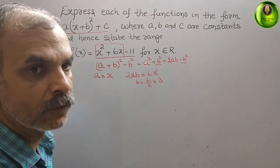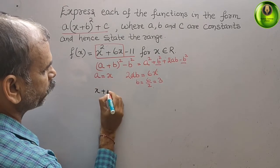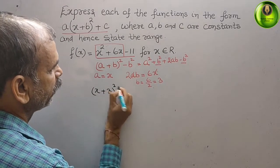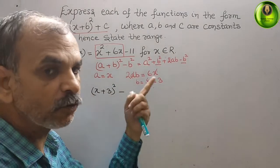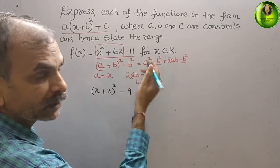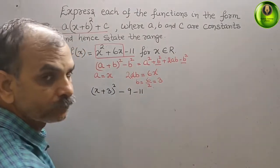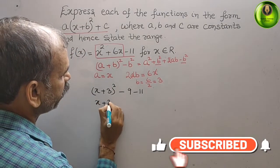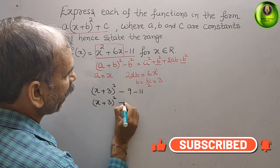Substituting, we get (x + 3)² - b², where b² = 3² = 9. Combined with the -11 from the original function: (x + 3)² - 9 - 11 = (x + 3)² - 20.